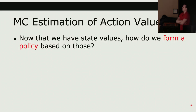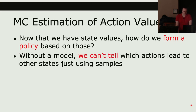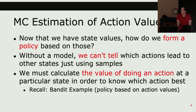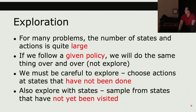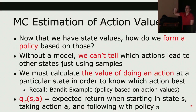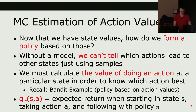Now that we have state-action pair values, how do we form a policy? We take the greedy approach — choose the action that maximizes Q(S,A). Without a model, we can't tell which actions lead to other states from samples alone, so we need the Q(S,A) values, not just V(S). Q(S,A) is the expected return when starting in state S, taking action A, and then following the policy. We look over all actions and our policy selects the one with the highest value.